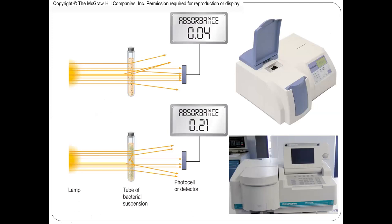The second method is using a colorimeter or spectrophotometer. Bacteria growing in broth will show turbidity — cloudiness. Higher turbidity means more bacterial cells. We see the spectrophotometer absorbance value — for example, 0.21 is larger than 0.04, meaning more bacteria in that tube. But be careful: this method also cannot differentiate live and dead cells, because even dead bacteria remain in solution and show turbidity.